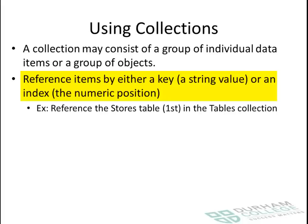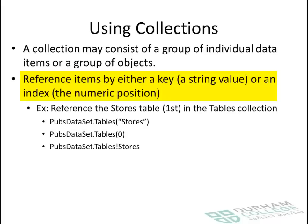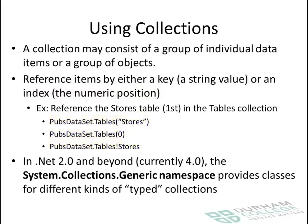The numeric position is the index, so that's what we've seen before — that's like using an array. For example, you can find the stores table in the tables collection by calling it 'stores' or by calling zero. We'll see examples of that later.